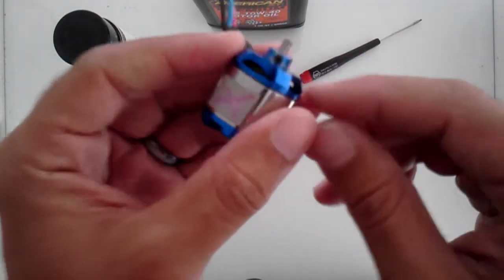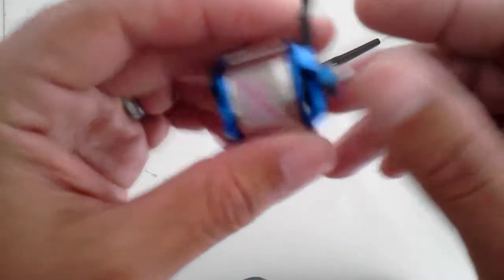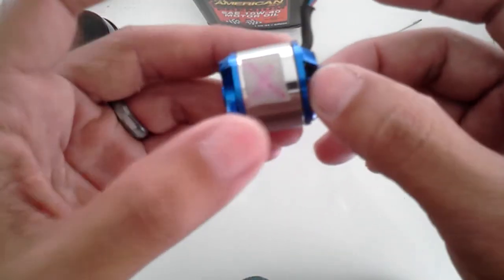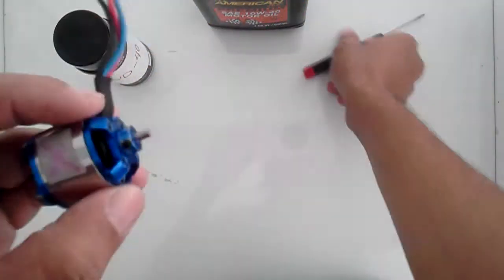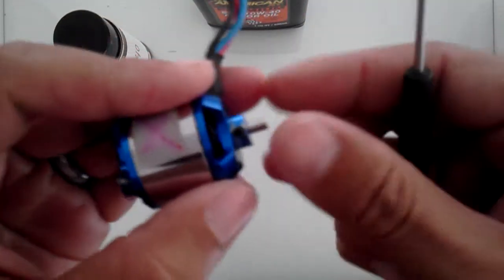To start, you want to take off the stopper on the bottom of the motor. That's what holds the motors together, the top part which is the bell on the bottom part where the windings are. You just unscrew that and take that off.